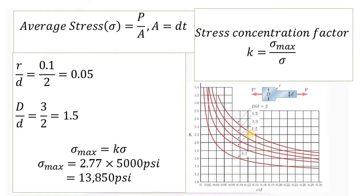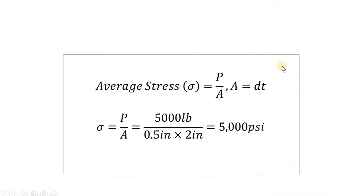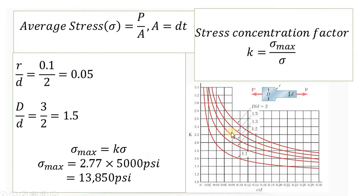So how to calculate the maximum stress? Maximum stress is the normal stress times Peterson's stress concentration factor K. So we find that stress maximum equals K times the normal stress. So what is K here? We use the stress concentration factor graph.